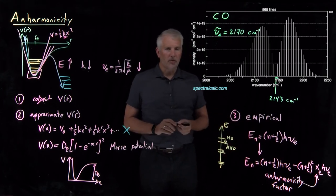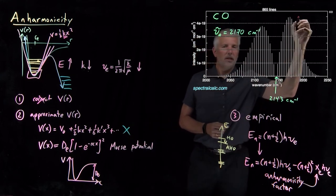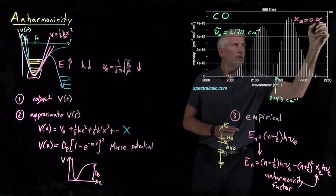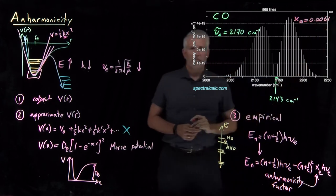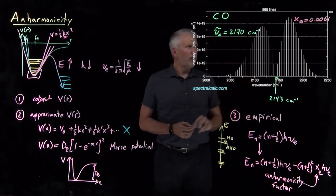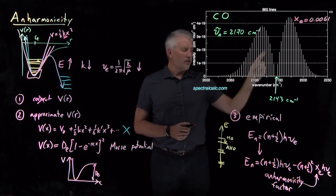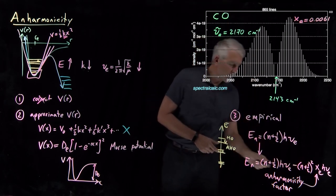For this carbon monoxide molecule in particular, if I give you the value of x_e, that's a pretty small correction. It's 0.0061.